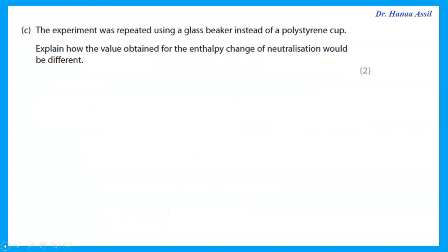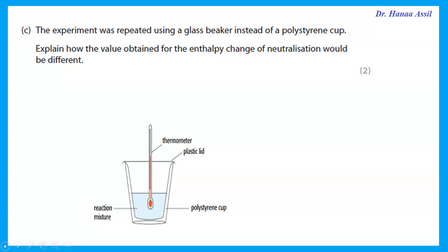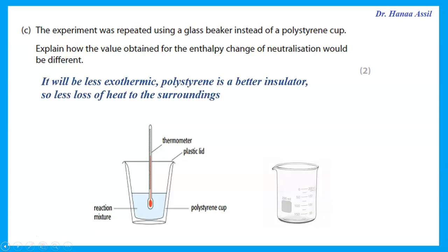The experiment was repeated using a glass beaker instead of a polystyrene cup. The value obtained for the enthalpy change would be less negative (smaller magnitude), because the glass beaker is not an insulator — there will be greater heat loss to the surroundings, giving a smaller temperature rise, compared to the polystyrene cup which is a better insulator and minimizes heat loss.